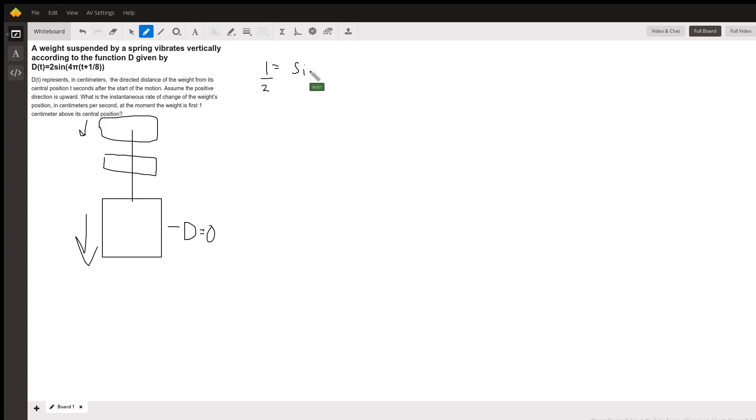I'm gonna distribute, so 1/2 is equal to sin(4πt + 4π/8), which is sin(4πt + π/2). Well, where on the unit circle is sine equal to one half? Let's use a circle. Where on a circle is sine equal to one half?